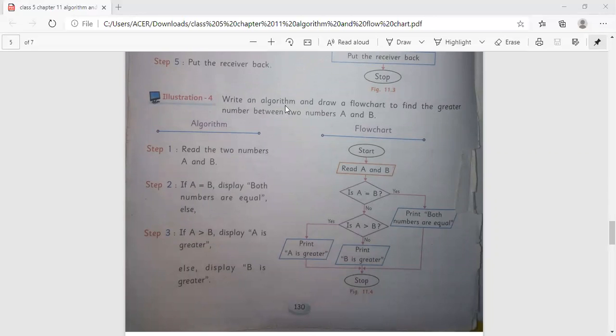Illustration 4: Write an algorithm and draw a flowchart to find a greater number between two numbers A and B. Algorithm: Read the two numbers A and B. If A equals B, display both the numbers are equal. Else, if A is greater than B, then display A is greater. Else display B is greater. The flowchart: Start, read A and B. Then if A equals B, then if A is greater than B, print B is greater. If yes, print both the numbers are equal. If yes, print A is greater and then stop.